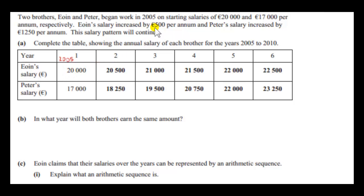Owen's salary increases by €500 per annum. So for 2006 the salary will be €20,000 plus €500. For 2007 the starting salary will be €20,500 plus €500, which is €21,000, and so on up to 2010. Peter's salary increases by €1,250 per annum. So we add €1,250 onto €17,000 to get €18,250 and we continue adding on €1,250 until we get his salary in the year 2010. We can see that in the year 2009 both brothers will earn the same amount, namely €22,000.